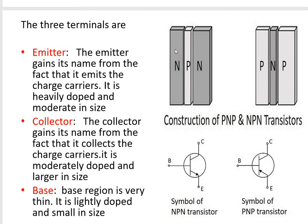NPN means two N layers with a P layer sandwiched between them. PNP means an N layer is sandwiched between two P layers. The first terminal is known as the emitter. The function of the emitter is to emit the charge carriers. It is heavily doped and of moderate size.